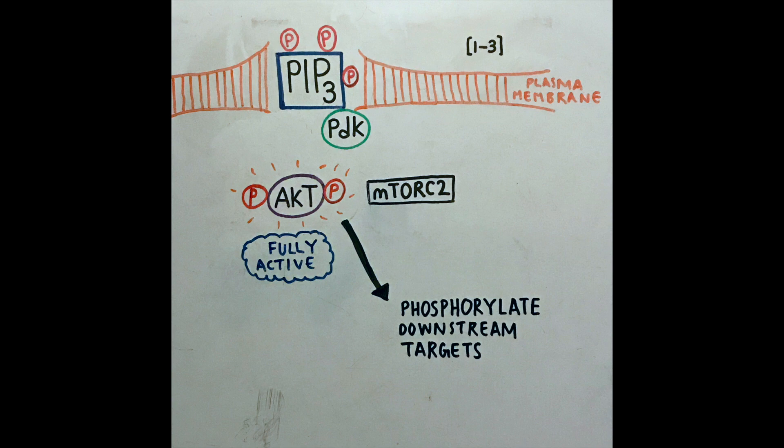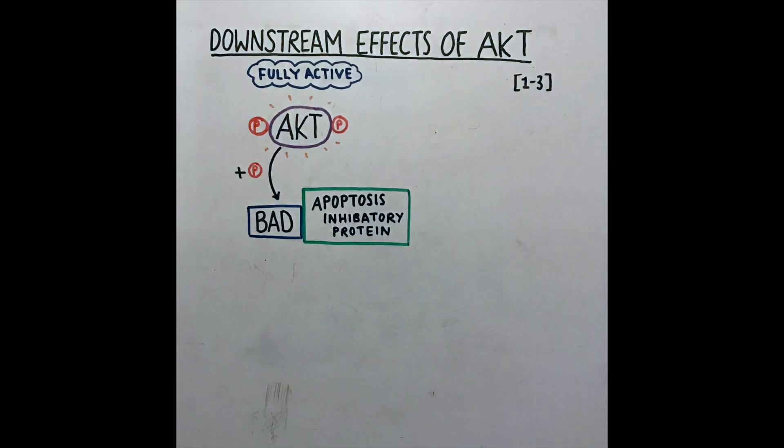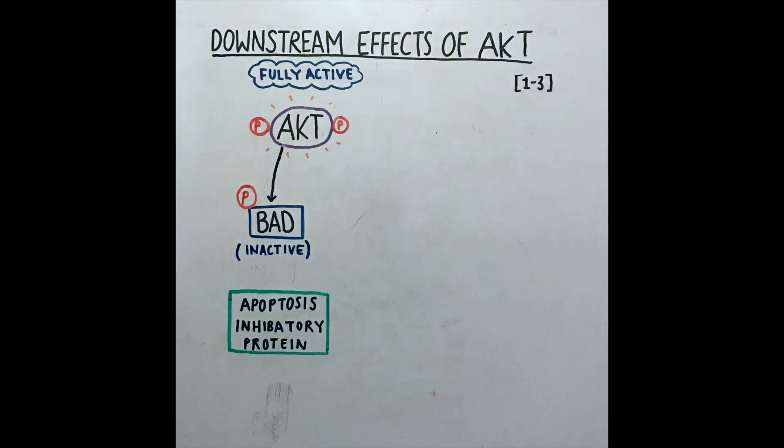When AKT phosphorylates BAD, BAD detaches from the apoptosis inhibitory protein and is inactivated.